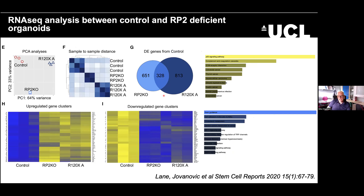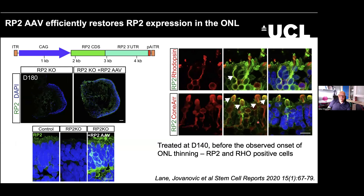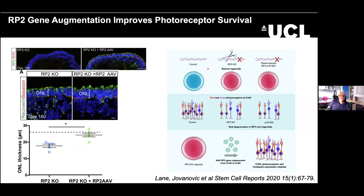RNA-seq at day 150 showed the most commonly induced genes were in P53 signaling and cell death pathways, confirming an induction of cell death. The cells affected appeared to be rods — cone numbers were not affected, if anything they were increased, but the number of cells expressing rhodopsin was much reduced. Day 150 is about when the cells really start switching rhodopsin expression on. We then collaborated with Jane Farrar's group in Dublin who had made a nice RP2-overexpression AAV. We transduced organoids with that and got beautiful transduction of the outer nuclear layer, with very good transduction of both rods and cones. Rhodopsin expression came back and the outer nuclear layer thickness was restored back to near control levels — gene augmentation is reversing the cell death phenotype seen with RP2 loss.